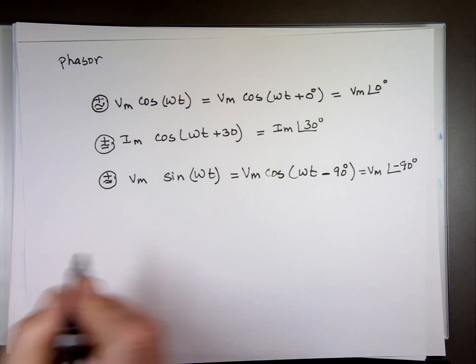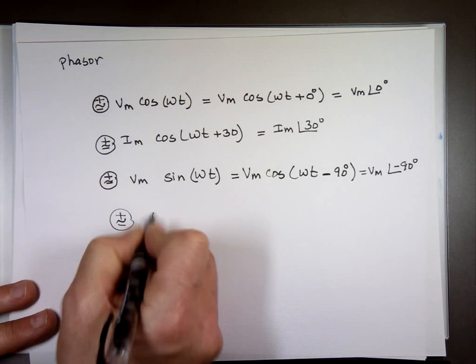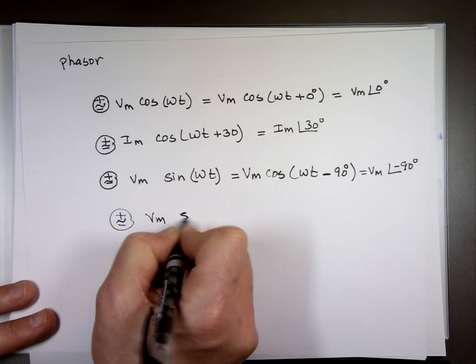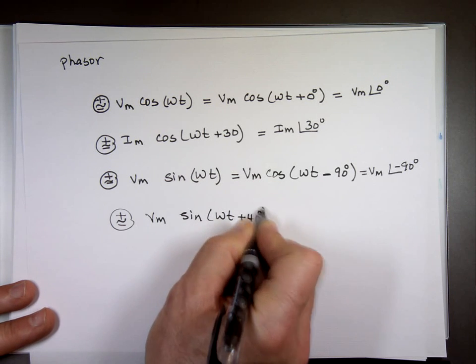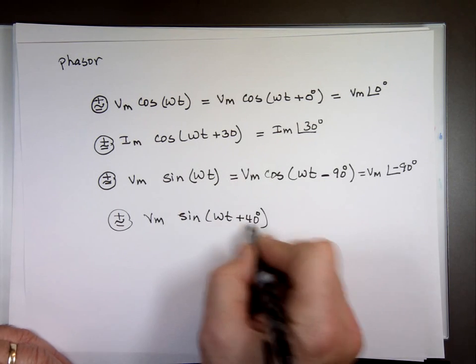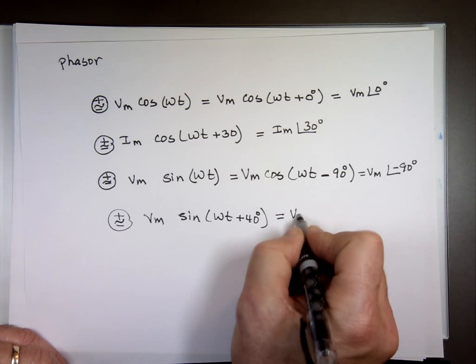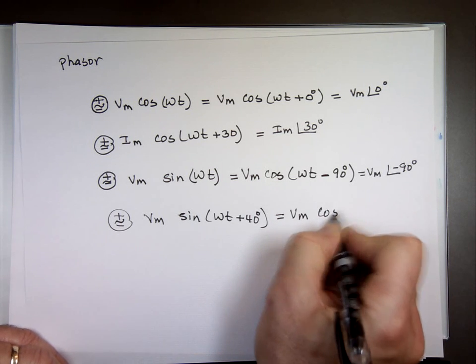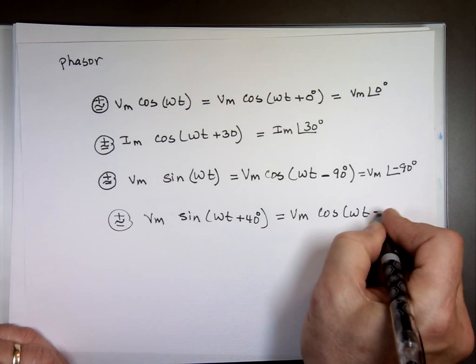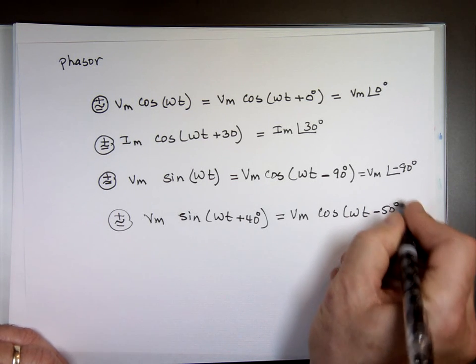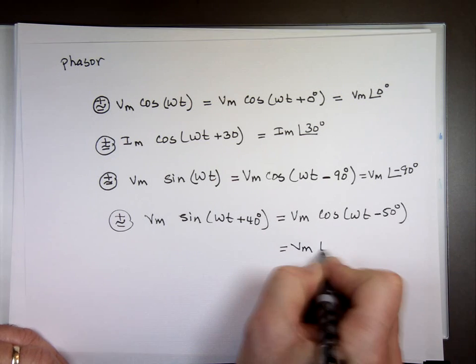So if I have a source here of Vm sin(ωt+40°), I go, well, I can change the sine to cosine by subtracting 90 degrees, right? So this would be Vm cos(ωt+40°-90°), which is what? Negative 50. So I can write that as Vm angle negative 50.